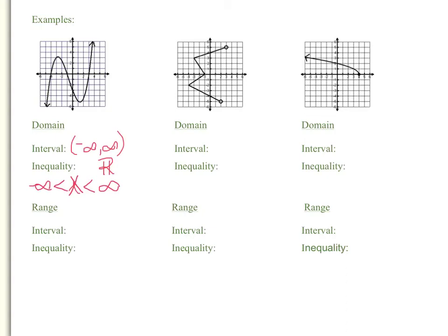Now let's look at the range of this graph. This curve is heading infinitely in a downward direction and also infinitely in an upward direction. So for interval notation, the range goes from negative infinity to positive infinity — exactly like the domain's interval notation. In inequality notation, instead of using x we use y, because we're talking about the range: y is greater than negative infinity but less than positive infinity. This range also contains all real numbers.